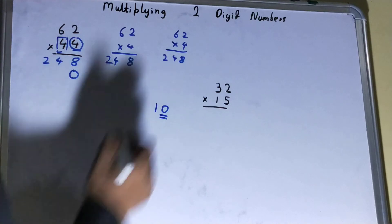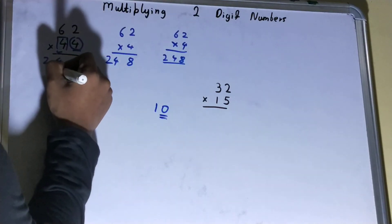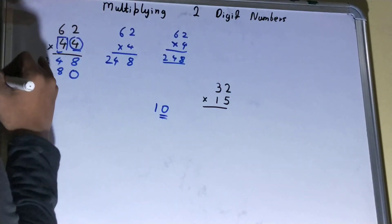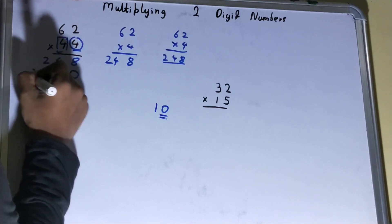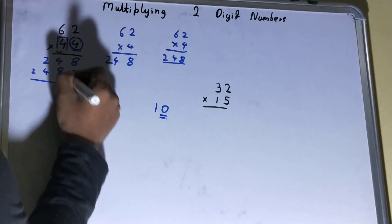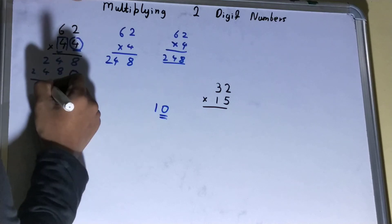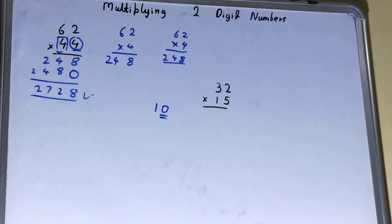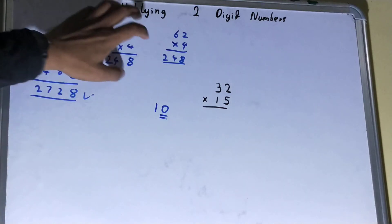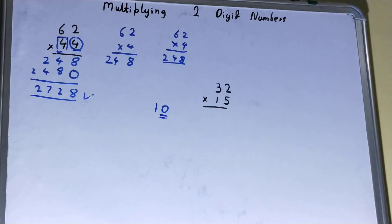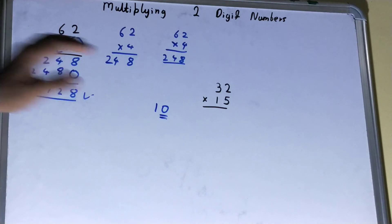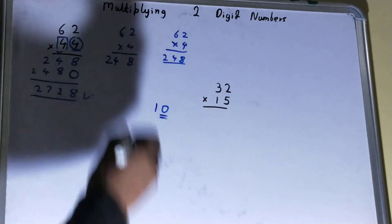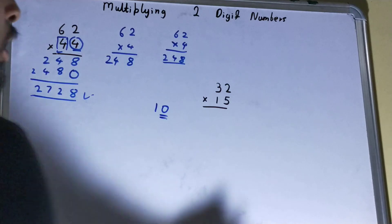You'll be having the answer 2728. That will be our final answer. So this is how we can solve separately and put the answer if you are finding it confusing. The other method, the more easier or faster method, is you multiply all at once rather than solving it separately.